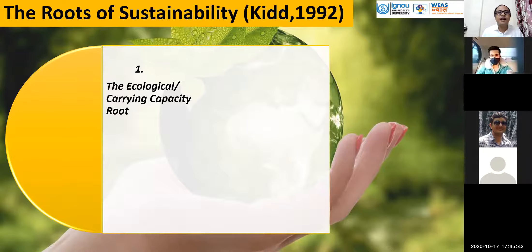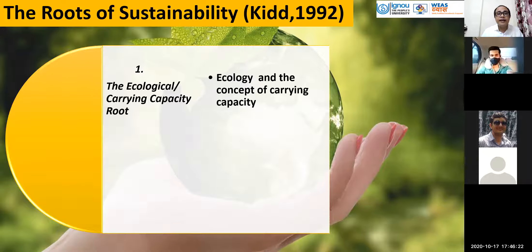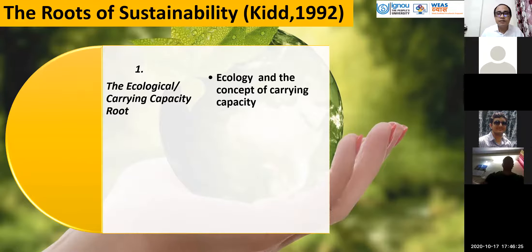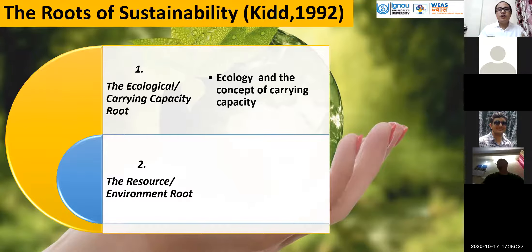The ecological carrying capacity route indicates that the concept of sustainability evolved with human civilization, but became more reflective and better understood after the industrial revolution, after the oil and energy crises. Before post-industrial humans understood sustainability from a holistic approach, we need to look into the carrying capacity of the world — the planet.